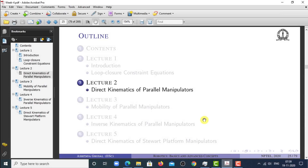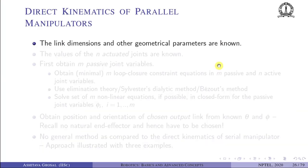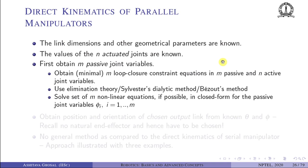Welcome to this NPTEL course on robotics basics and advanced concepts. In the last lecture we introduced parallel robots and discussed how to devise loop closure constraint equations. In this lecture we look at direct kinematics of parallel robots. In direct kinematics of parallel manipulators, the link dimensions and other geometrical parameters are known, and the values of the n actuated joints are known. The first task is to obtain the m passive joint variables.